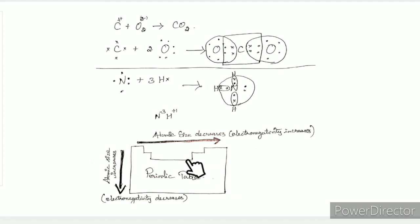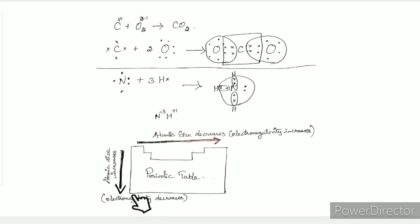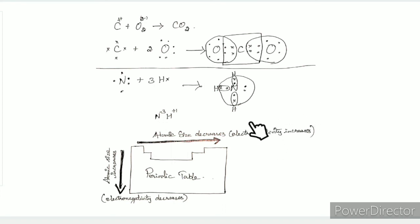In the periodic table, moving left to right, electronegativity increases. Moving top to bottom, electronegativity decreases. For ionic bonds between metal and non-metal: metal oxidation number is +1 and non-metal oxidation number is -1. For hydrogen, in hydride form, the hydrogen oxidation number is -1.